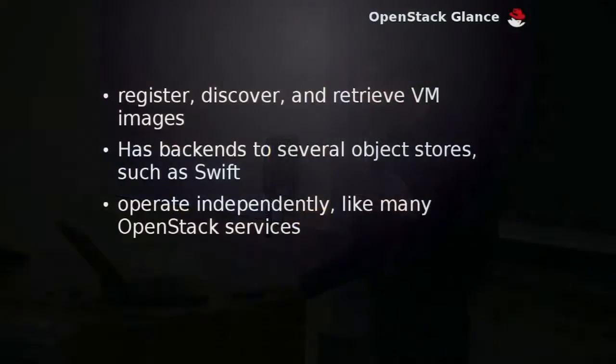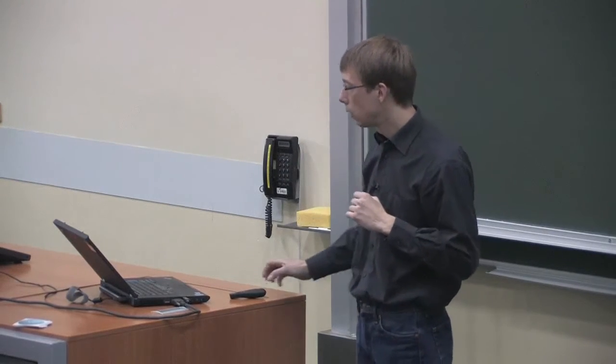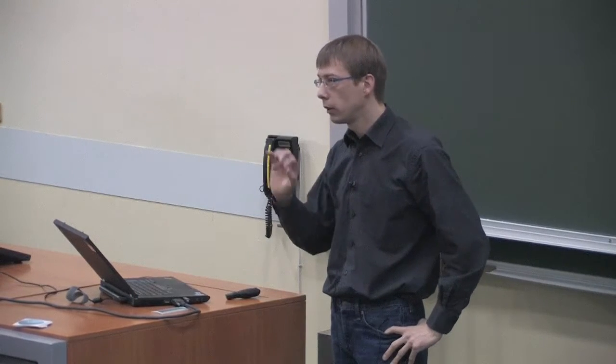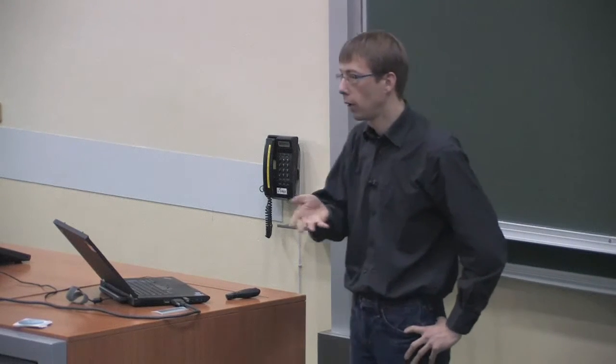So to spawn a VM, you need an image service which is called Glance. It handles registering, discovering, and retrieving virtual machine images. It supports many formats like QCOW, QCOW2, or VMDK and so on. And it has several backends to object stores. So it's just to talk to Nova. And on the other side, for example, to talk to Swift or a backend. And it's intended to operate totally independently. So you could also use it without Nova if you have a use case for this.